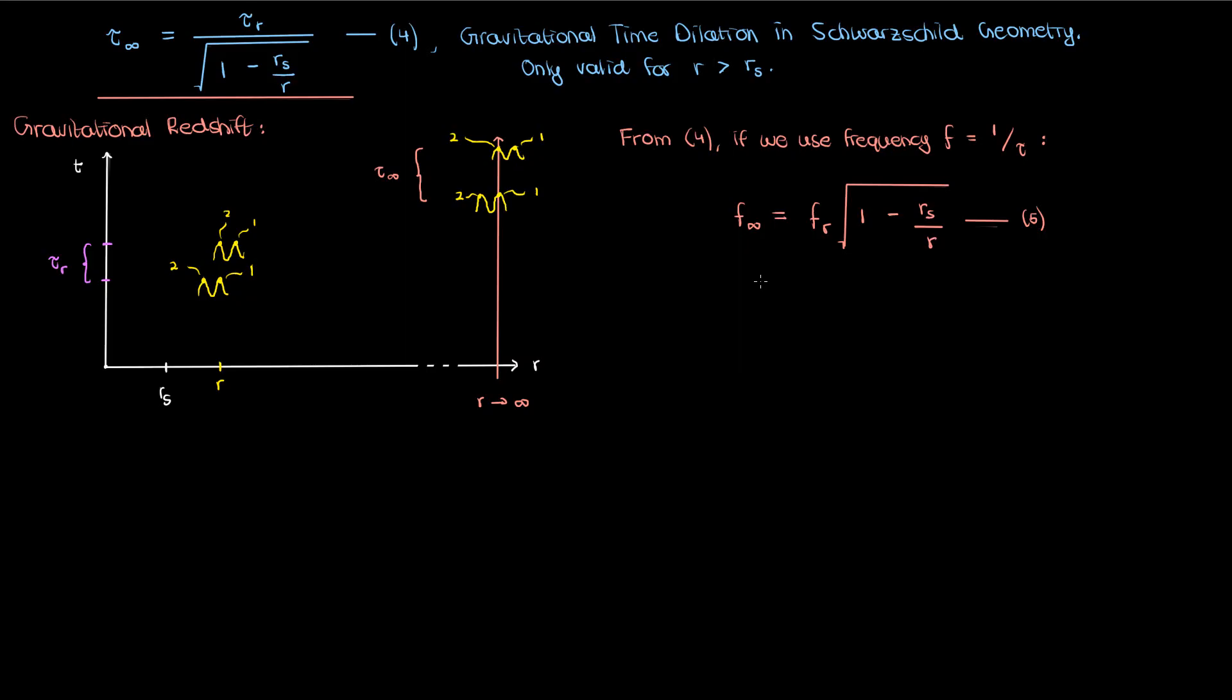We found a similar redshift formula in a previous video on general relativity, but that was for the special case of a uniform gravitational field. This is specifically the redshift formula for Schwarzschild geometry. So we've spent quite a bit of this lesson talking about the time component of the Schwarzschild metric. Let's now talk about the spatial component.